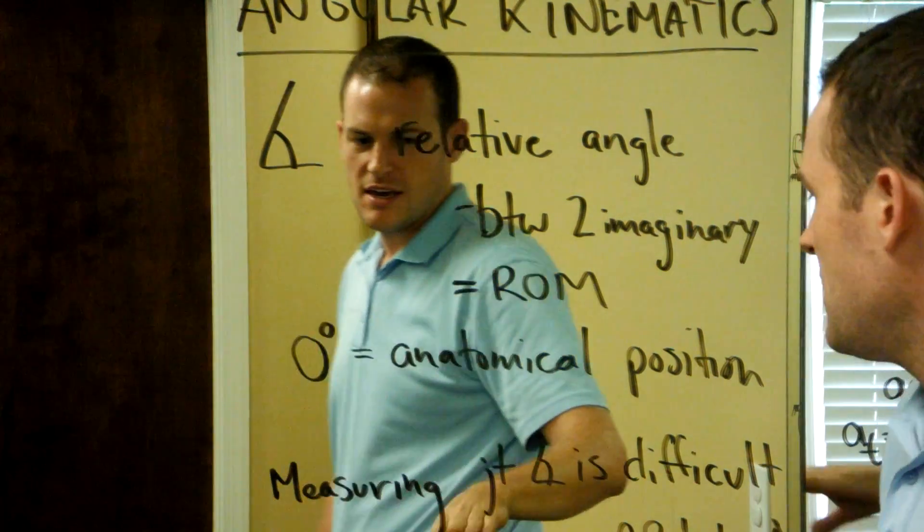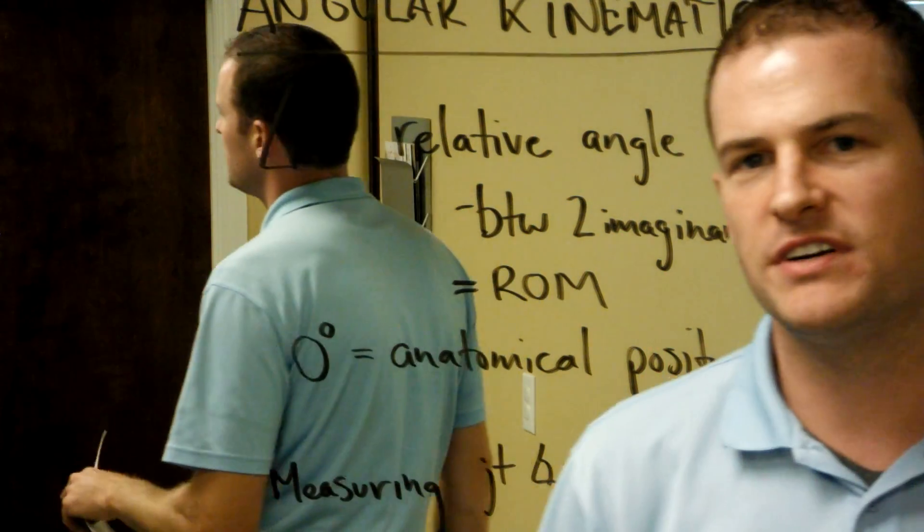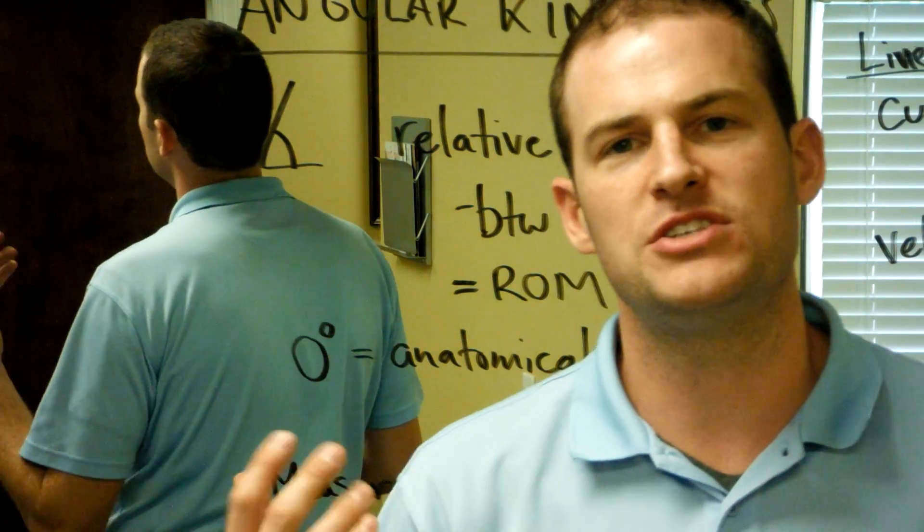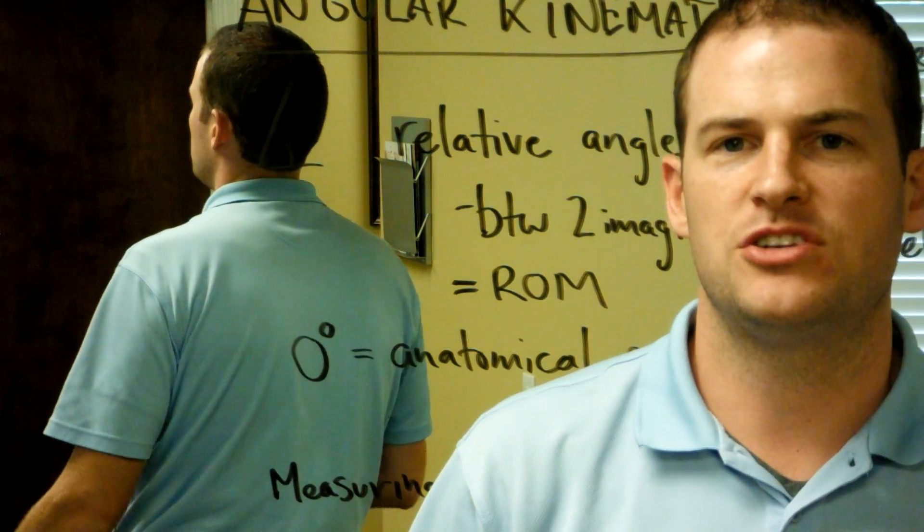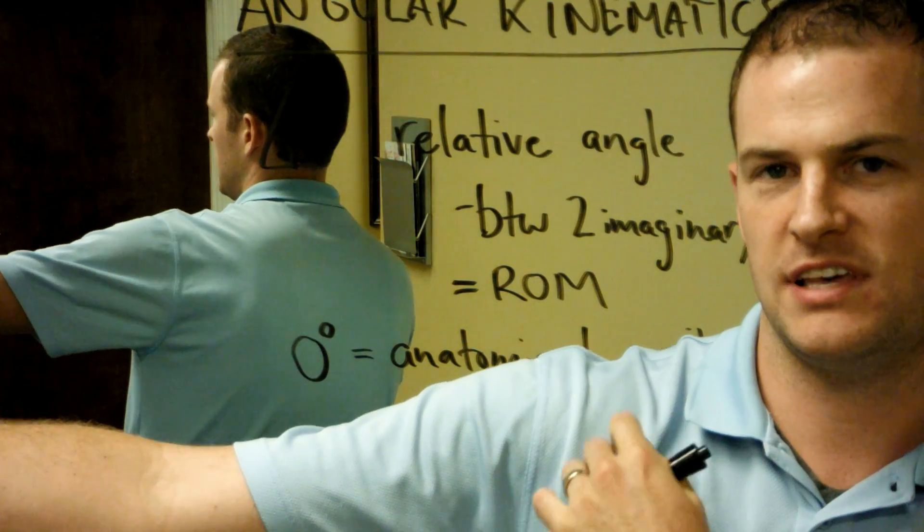And finally, for part one, measuring joint angles is very difficult because the instant center of rotation is always changing. One of the easiest examples would be vertical abduction in the shoulder.